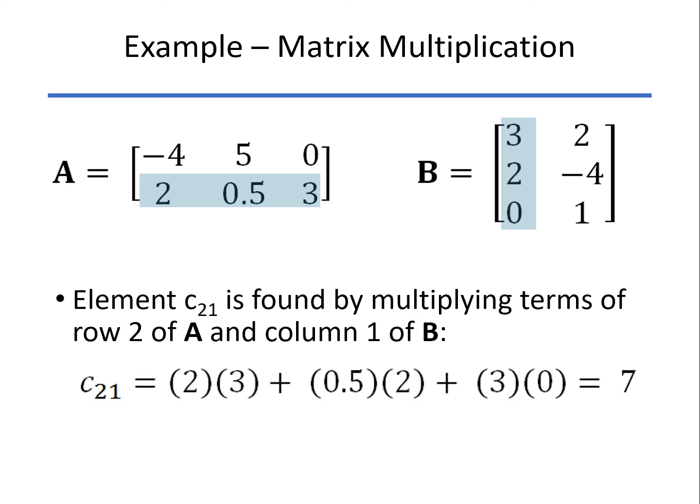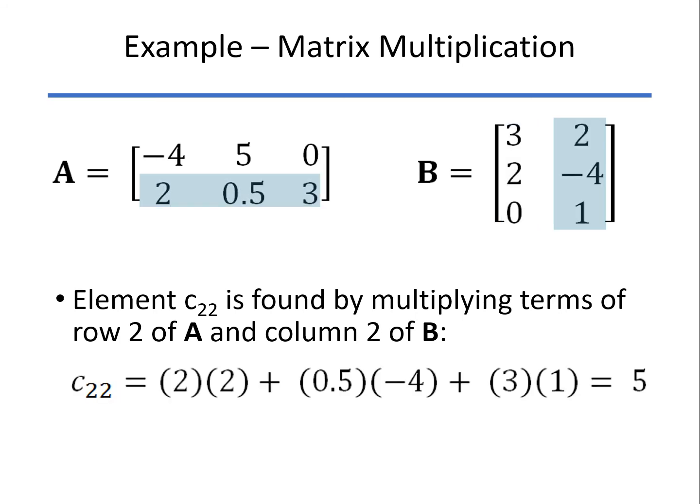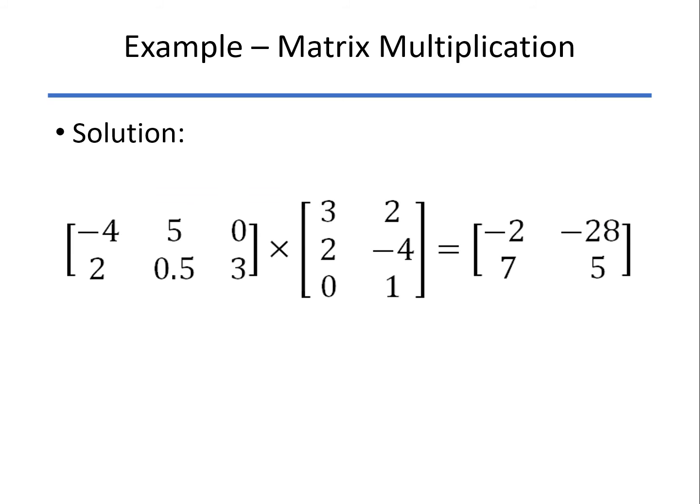To find element C12, that's first row times second column and so forth. C21: second row, first column, and C22: second row, second column. And there's the answer.